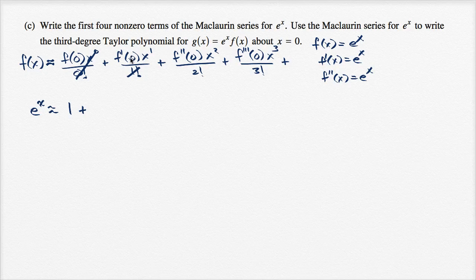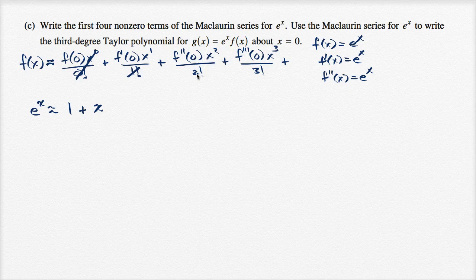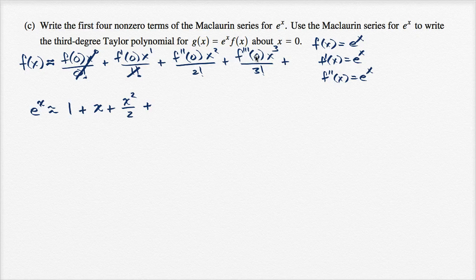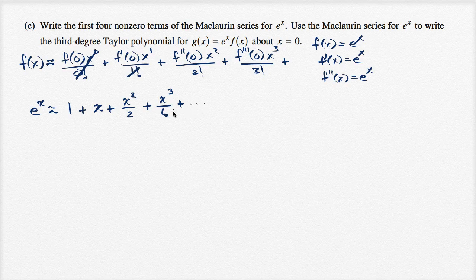So the first derivative evaluated at zero is still e to the zero, giving us plus x. Then the second derivative evaluated at zero is still one, so it's one times x squared over two factorial — plus x squared over two. Two factorial is just two times one. And then the third derivative evaluated at zero is e to the zero, which is one, so plus x to the third over three factorial — which equals six. So we just wrote the first four nonzero terms of the Maclaurin series for e to the x.